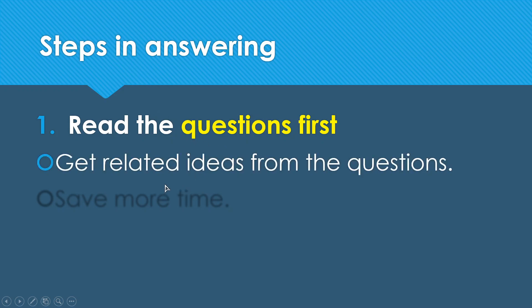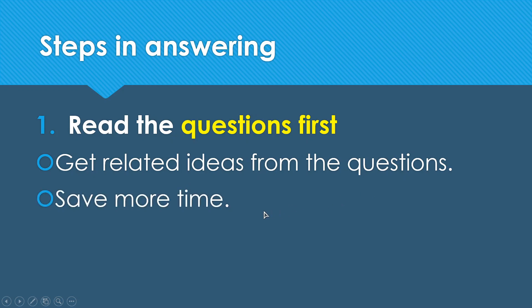Read the questions first — get related ideas from the questions, and this will save more time. When you have an unseen comprehension and you're reading a story or a text or a passage, you need to read the questions first and then go back to the reading part.